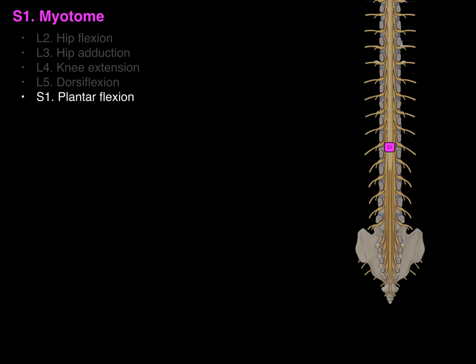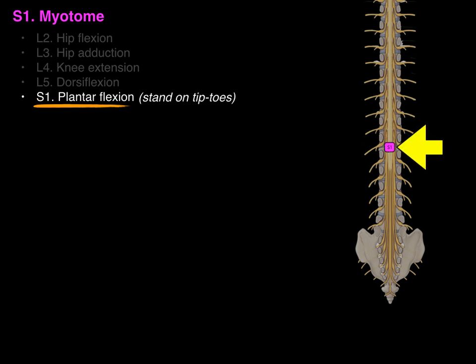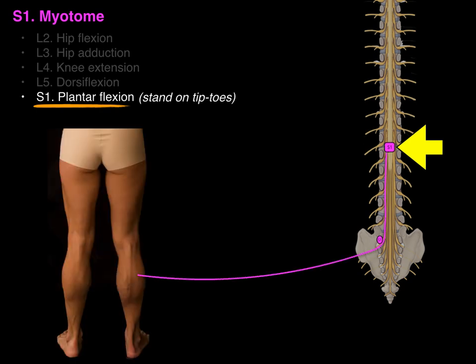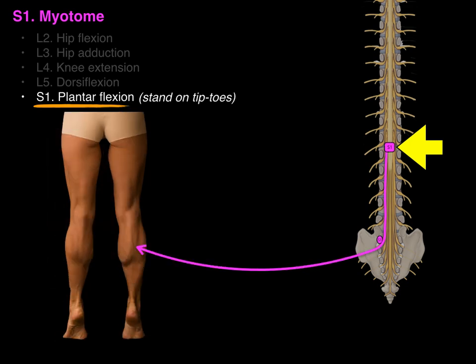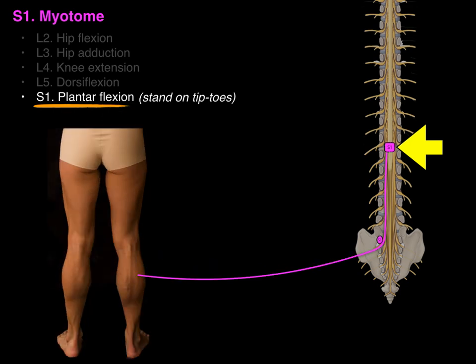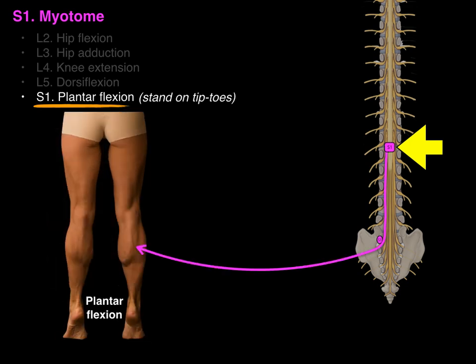Finally, S1 is plantarflexion, which is standing on your tippy toes or pointing your toes. There's the S1 spinal cord level and the S1 vertebral segment; the motor neuron comes down and goes to the posterior calf muscles. That movement — standing on your tippy toes — is called plantarflexion, and it's associated with the S1 myotome.